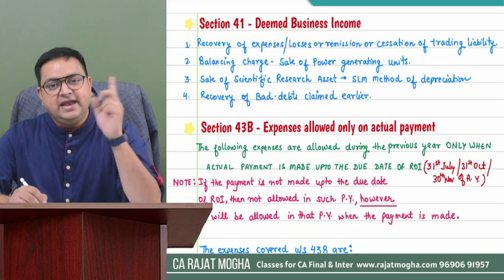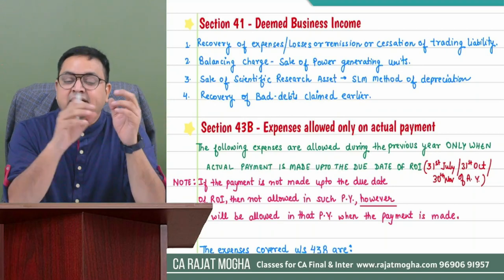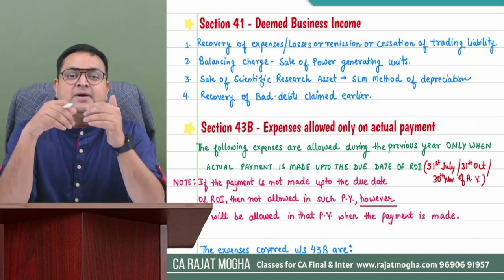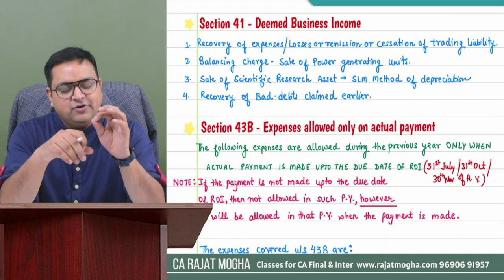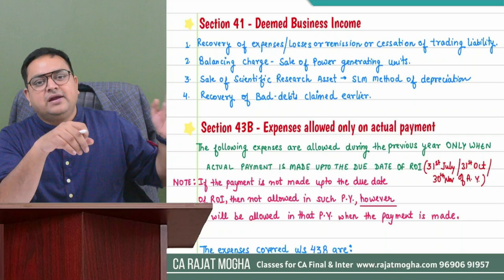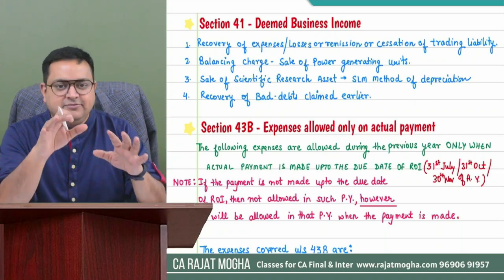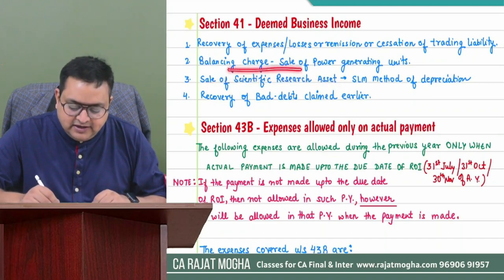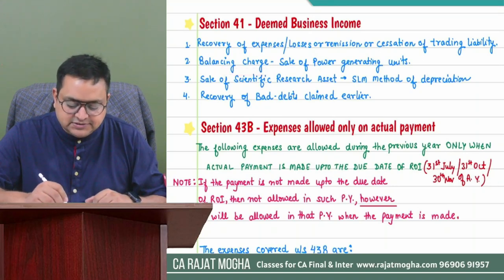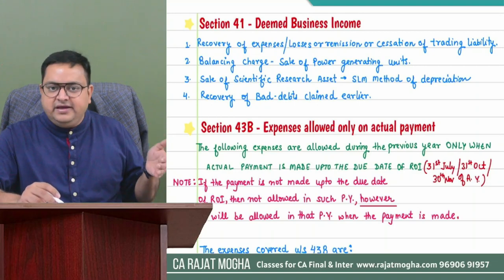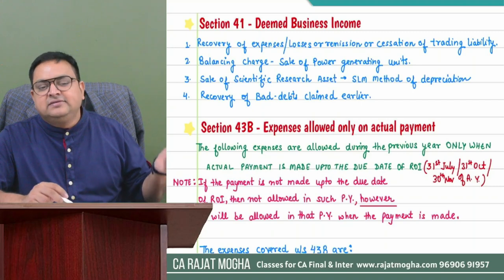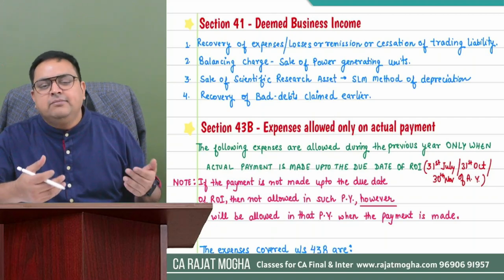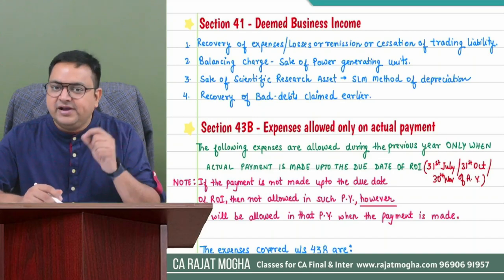Under Section 41: recovery of bad debts which were claimed earlier becomes deemed business income. Important note — if a bad debt was not allowed in the earlier year and is now recovered, it will not become income again. Only bad debts that were actually claimed and allowed become income upon recovery. Also covered: sale of scientific research assets, balancing charge, and recovery of any previously claimed expense — including cessation of trading liability.